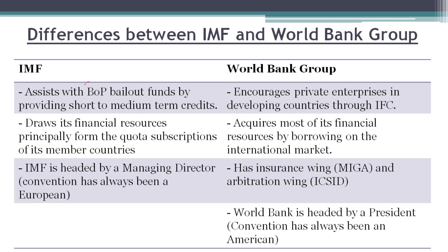IMF assists with balance of payment bailout funds by providing short- to medium-term credits or loans. The World Bank, especially IBRD and IDA, gives loans for long-term periods, and most of the time these loans are highly subsidized and have a soft loan nature.